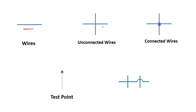You will find these wires in circuit diagrams and device schematics. This is an unconnected wire because there is no sign here. But this is a connected wire because in the middle of these two lines we have a circle — this circle means there is a connection between this wire and this one.